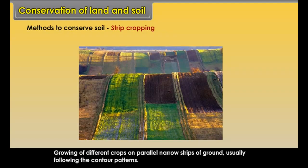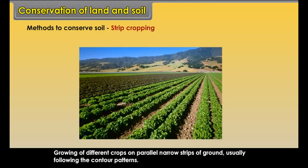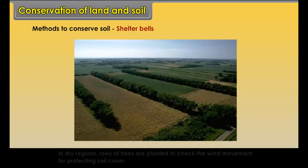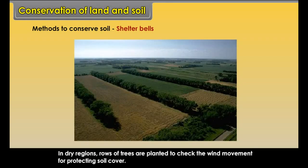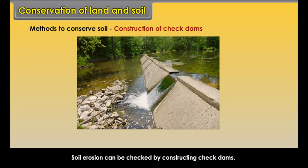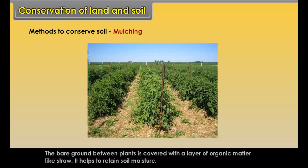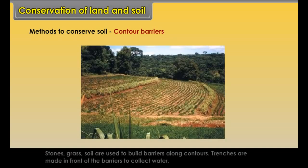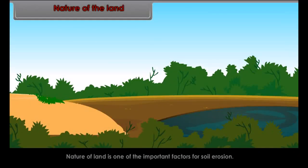Strip cropping: growing different crops on parallel narrow strips of ground, usually following the contour patterns. It helps to prevent the spread of gullies. The bare ground between plants is covered with a layer of organic matter like straw, which helps to retain soil moisture. Contour Barriers: stones, grass and soil are used to build barriers along contours, and trenches are made in front of the barriers to collect water.